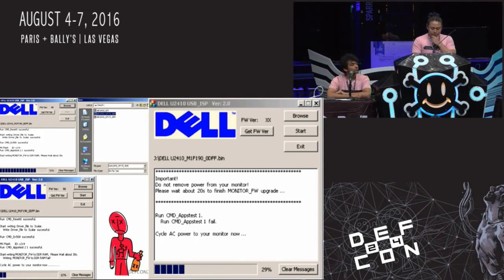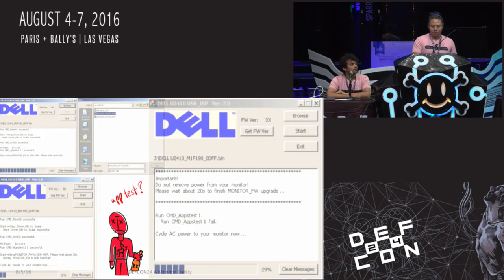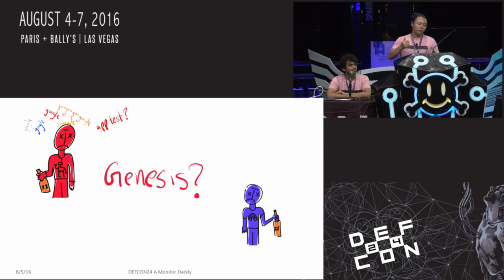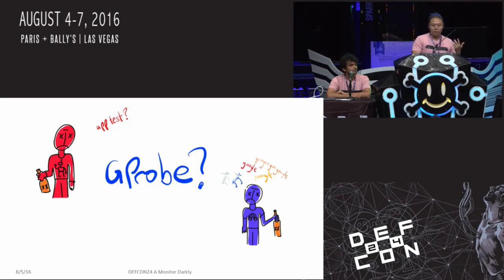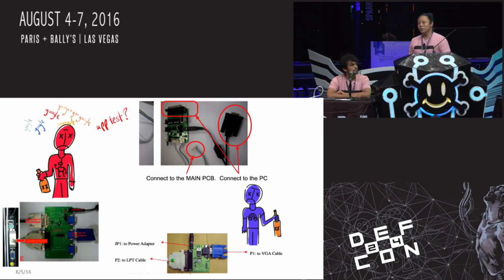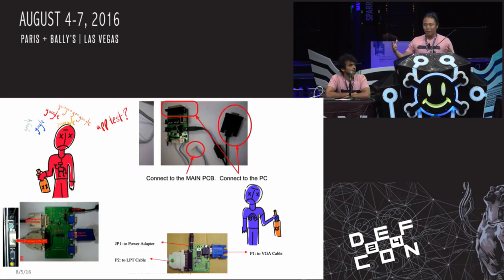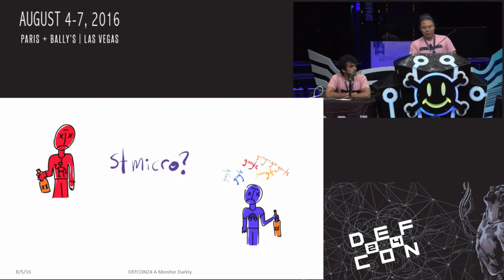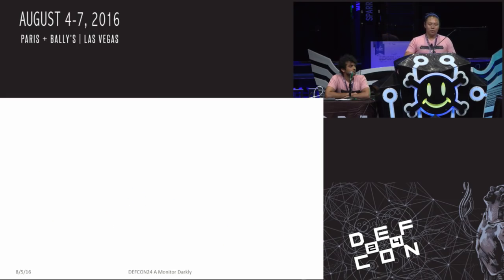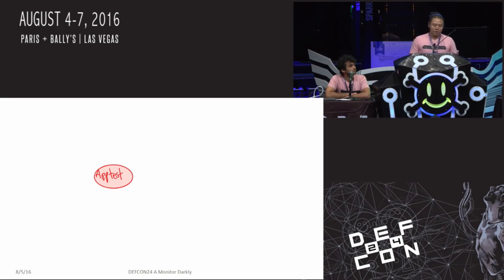We looked at the output of this program and said, what is an app test? What is this all about? We started Googling and found a lot of documents mentioning Genesis and G probe and all this other stuff. We also found documents from the late 90s and early 2000s with mystery hardware that updates firmware from really old monitors — a parallel port with power supply going to VGA that somehow changes firmware on monitors. We found mentions of SD Micro, Interlux, Athena, and Dell. After days and days of Googling, we figured out roughly how this all happened.